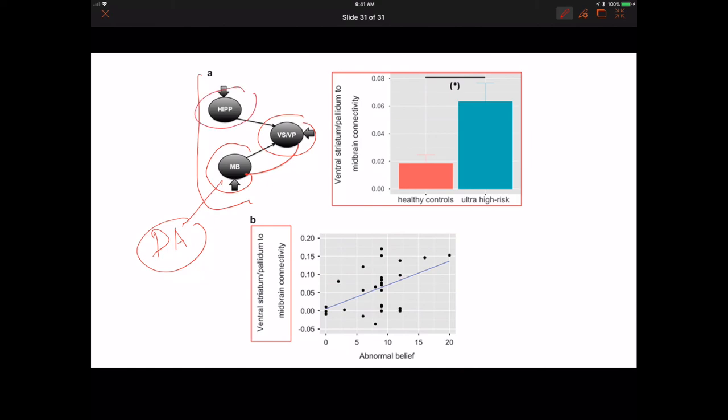This abnormal connectivity of the midbrain, the ventral striatum, and the hippocampus shows that the ultra-high risk group has much different wiring intensity than the control group. Furthermore, the intensity of the wiring correlates with the degree of abnormal belief present in the ultra-high risk group.